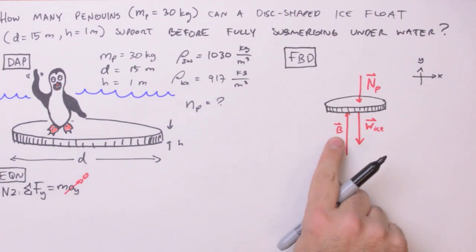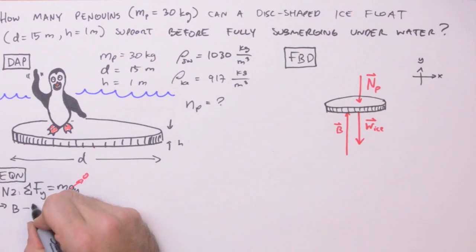Next we'll retrieve the forces from the free body diagram. In the positive y-direction we have the buoyant force, and in the negative y-direction we have the weight of the ice, and the normal force due to the penguins equals zero.